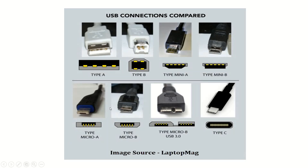Like the Mini USB Type A, the Micro USB Type A was also not very popular and was rarely used for any commercial appliances. The Micro USB Type B, however, is a tiny connector that's popular on all kinds of portable devices. Everything from Android phones to external battery packs to Bluetooth headphones uses a Micro USB port. Some smartphones have now moved on to the newer USB Type C port.